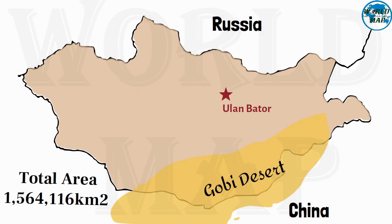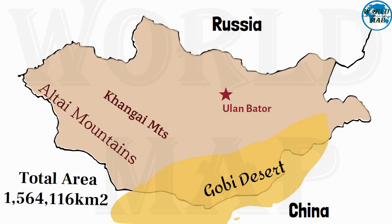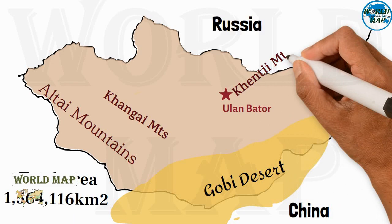Mountains of Mongolia: Altai Mountains, Khangai Mountains, Khentii Mountains, and Sayan Mountains.